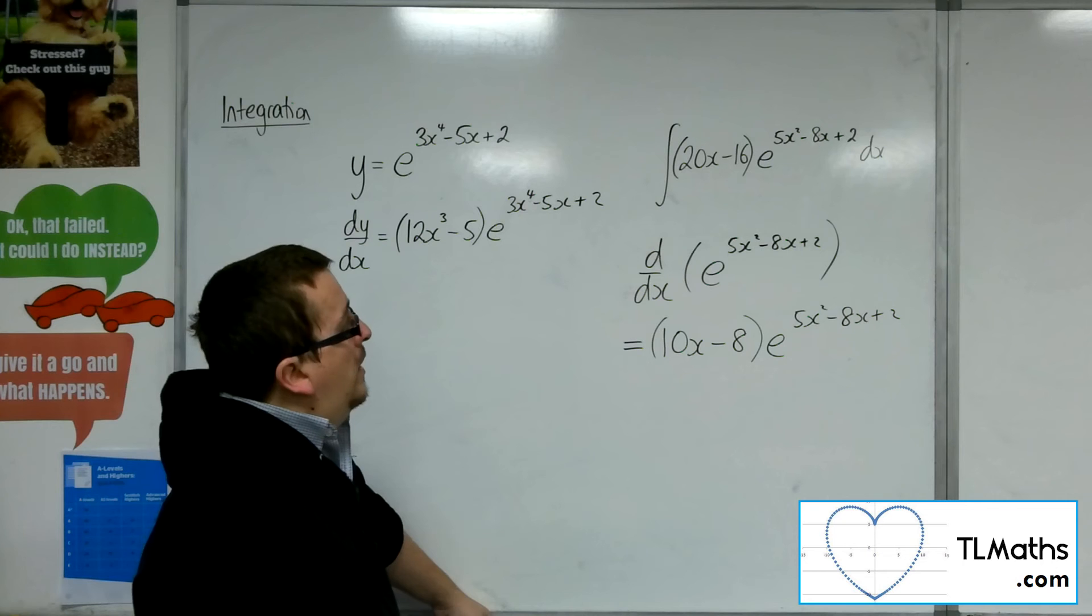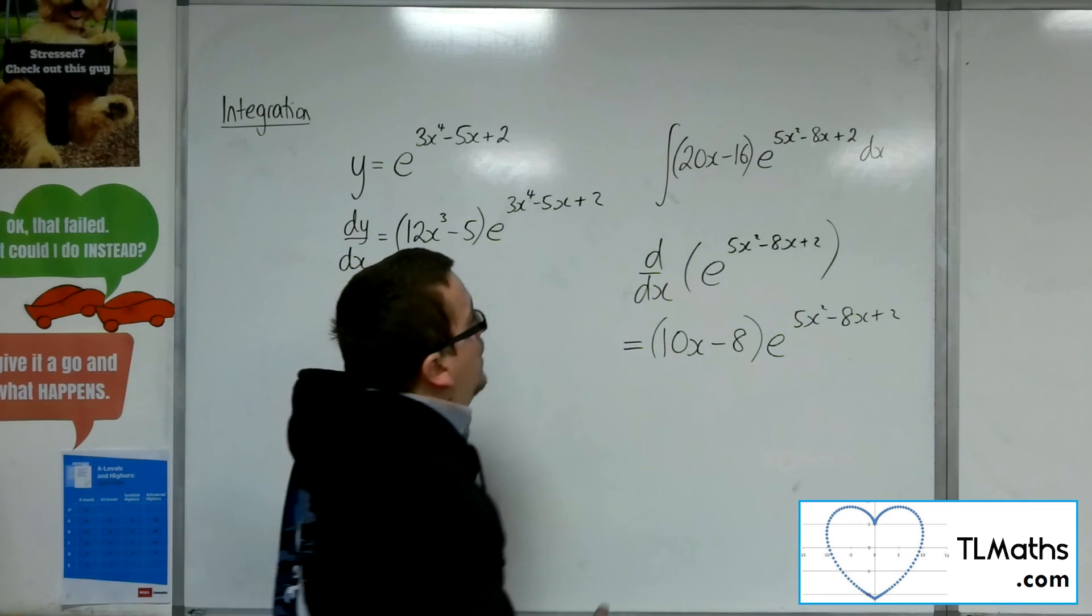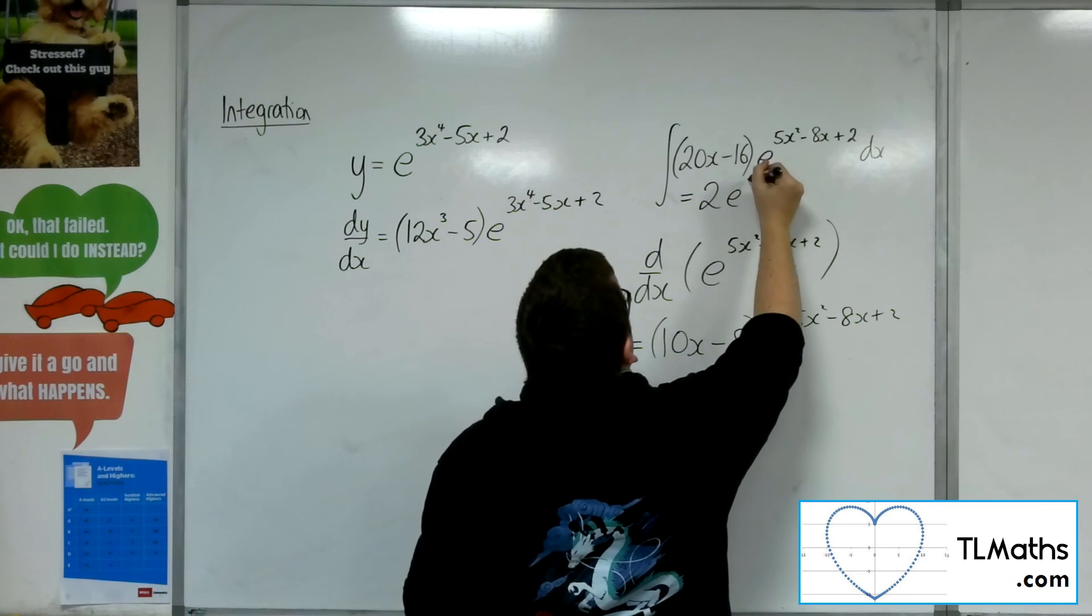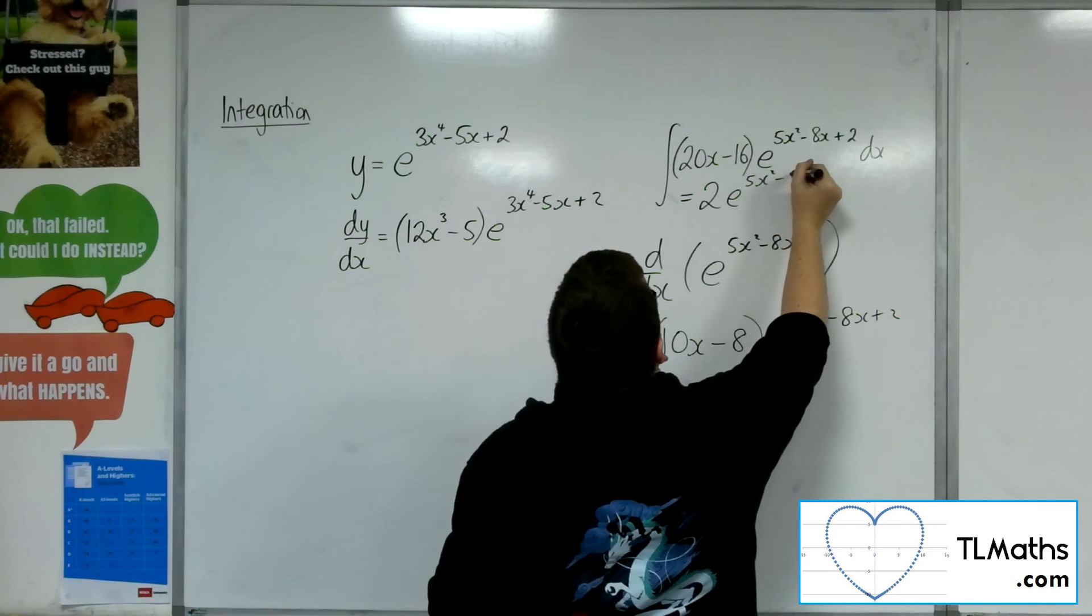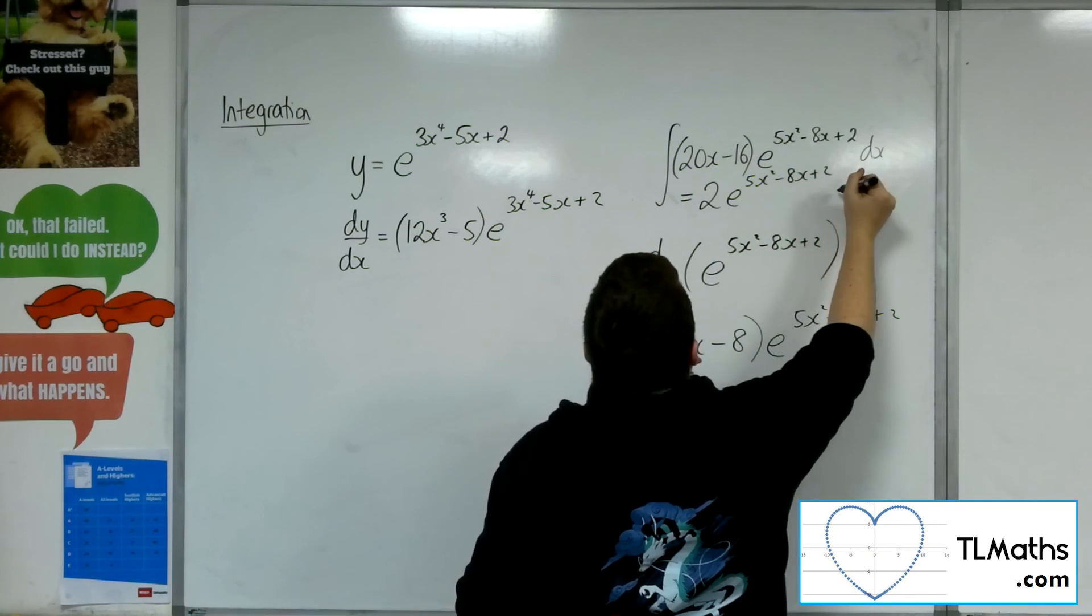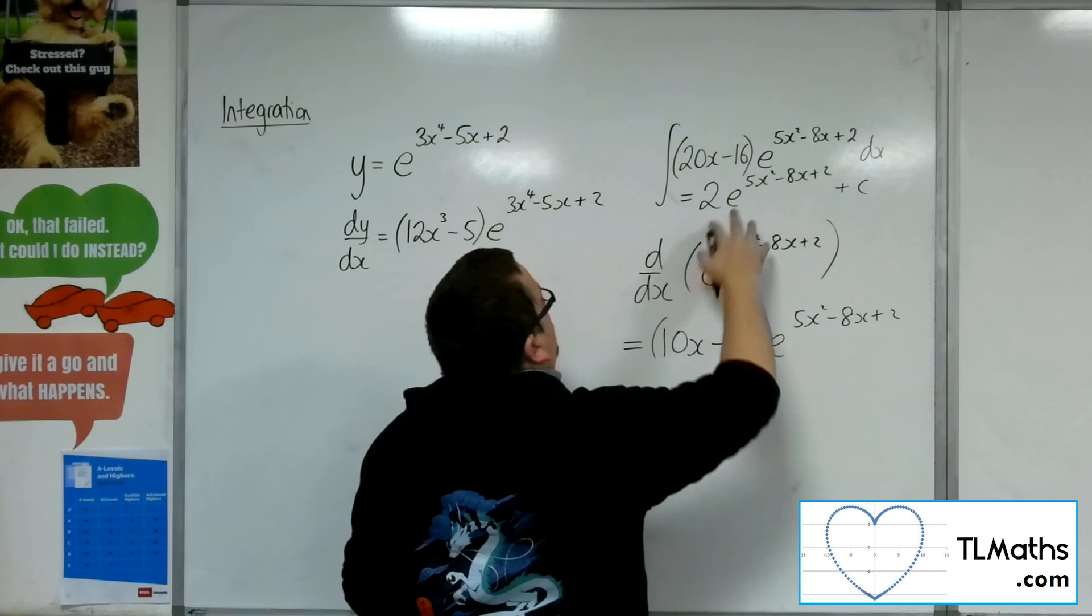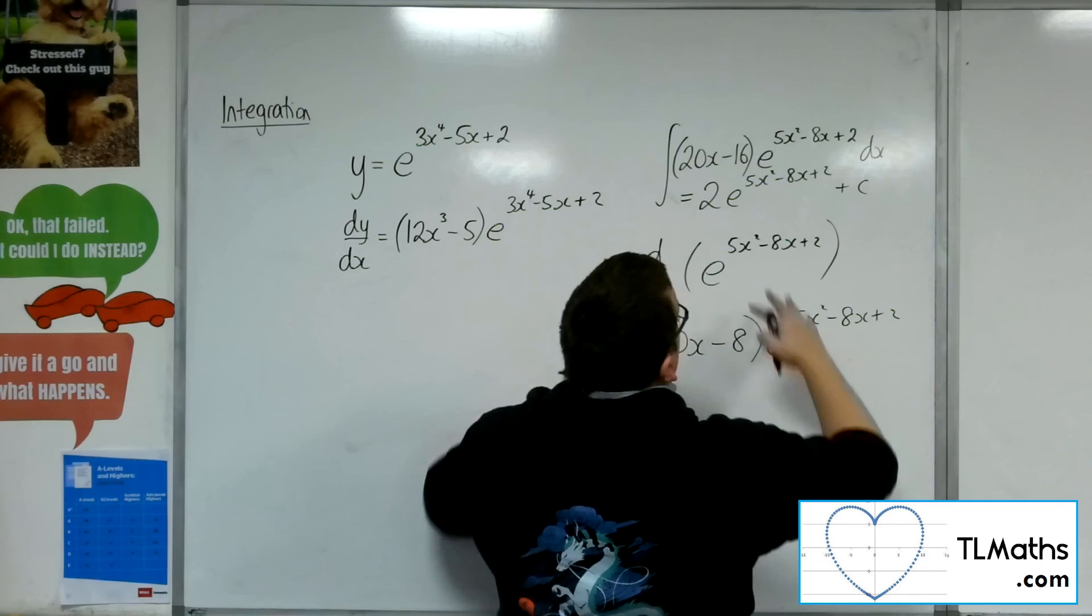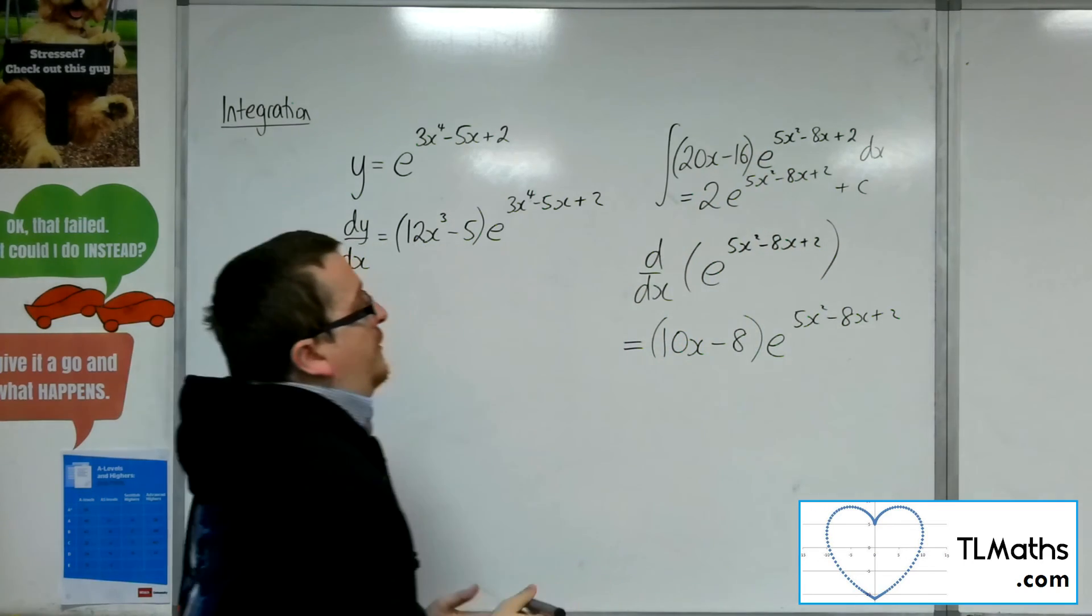So I am going to need it to be 2 lots of e to the 5x squared minus 8x plus 2 plus c in order to multiply that by 2 to get me back to what I started with.